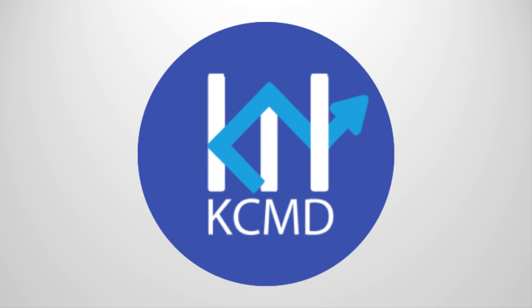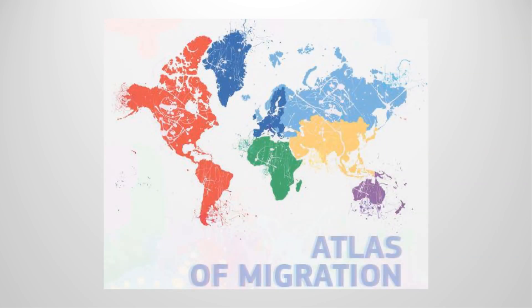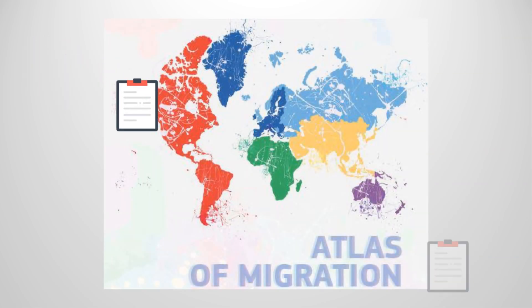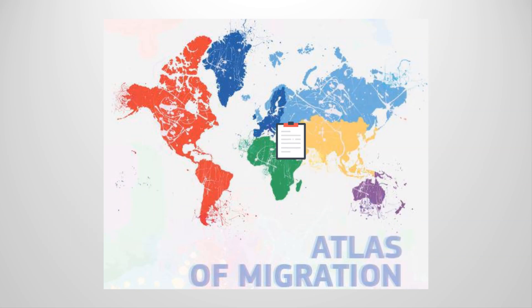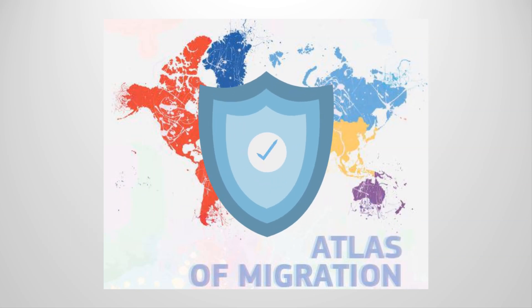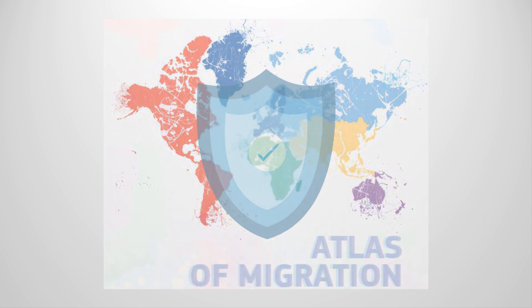To introduce facts and clear data to discussions about migration, the European Commission's Knowledge Center on Migration and Demography developed a tool called the Atlas of Migration. This collection of data from numerous sources is a central, easy, accessible source of factual information. So let's spend some time looking at its composition and use.